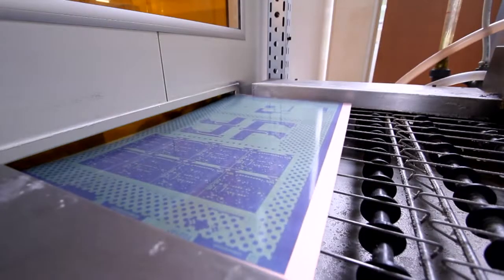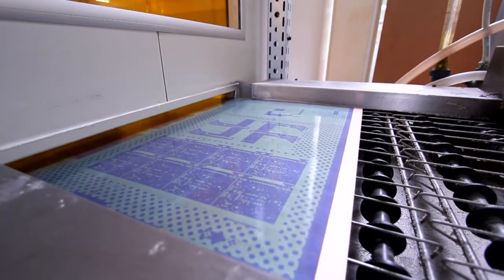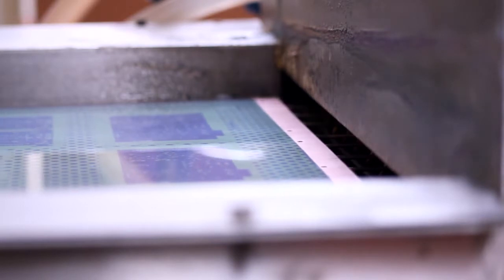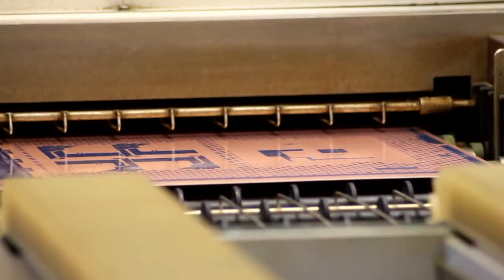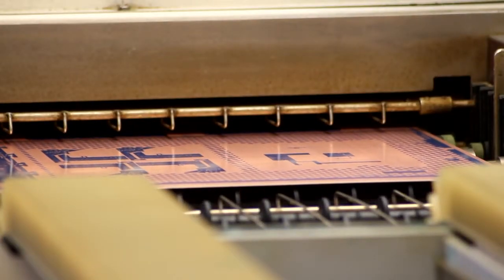Outside the yellow room the panel is sprayed with a powerful alkali solution which removes the unhardened resist. The panel is pressure washed and dried. The copper pattern we want is now covered by the hardened resist.